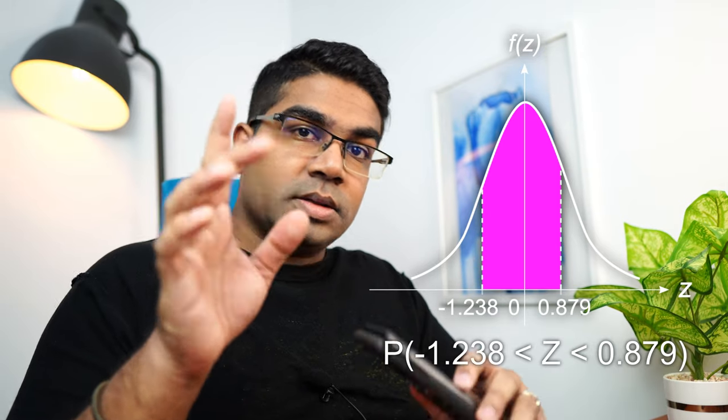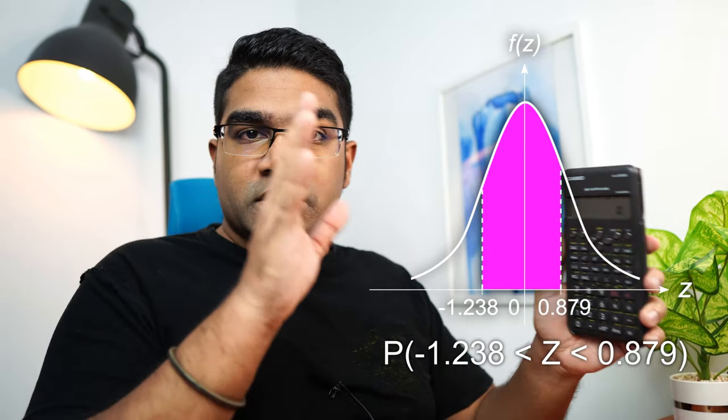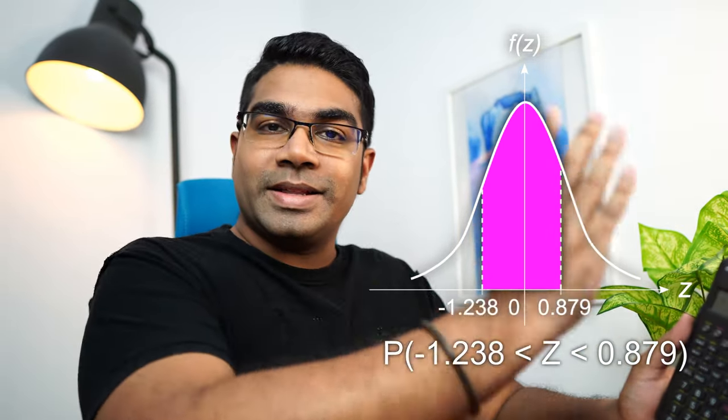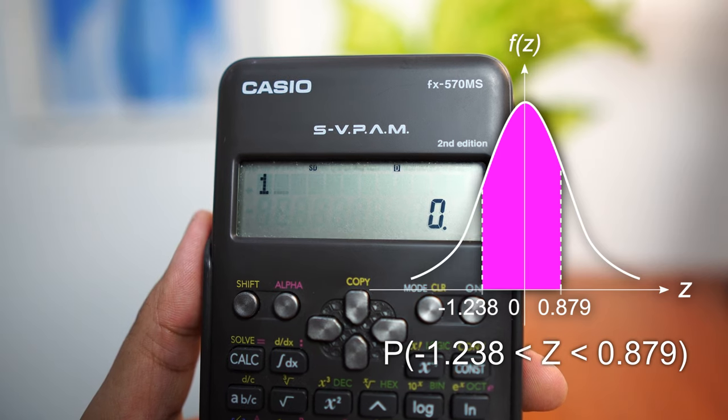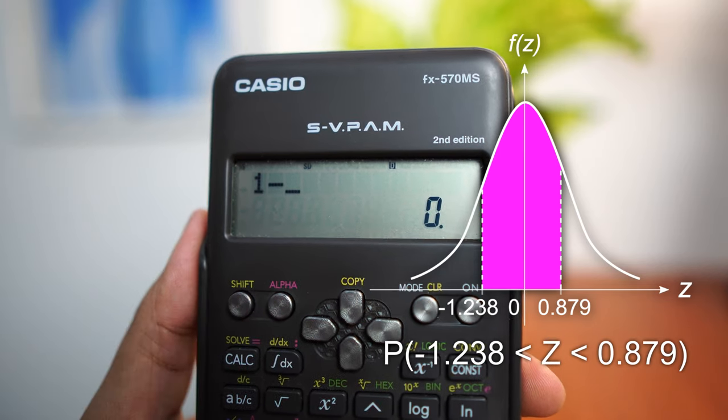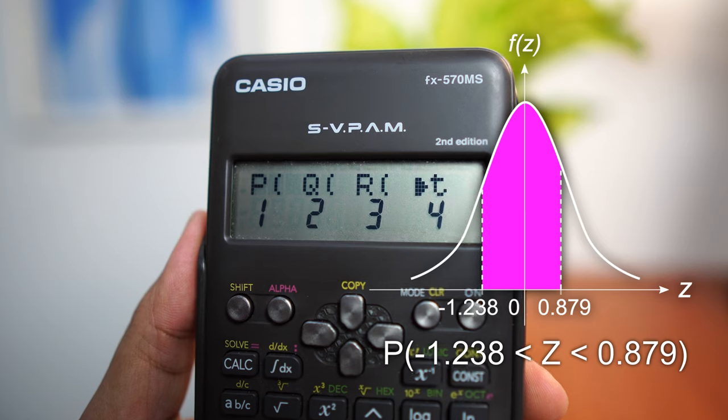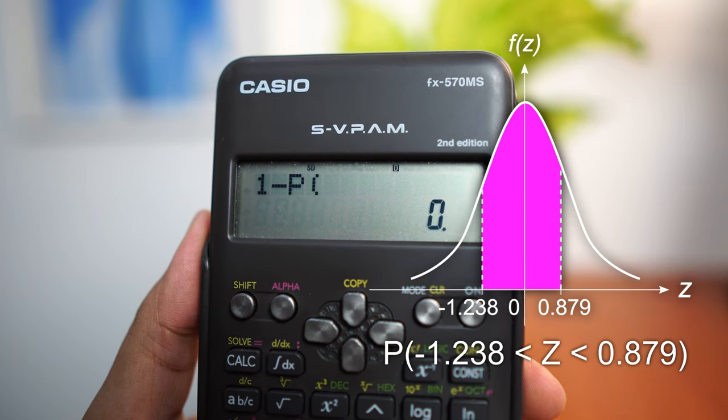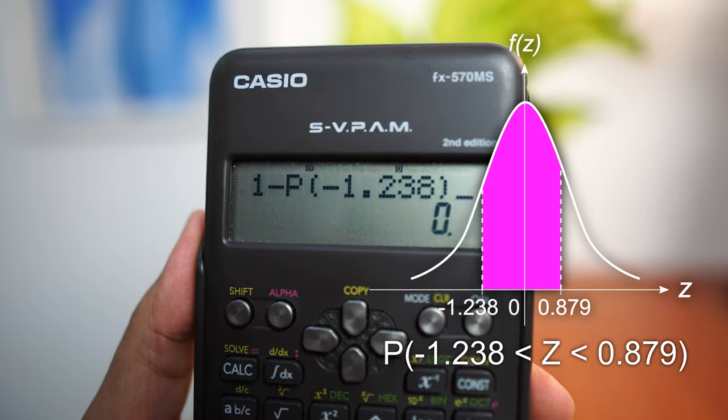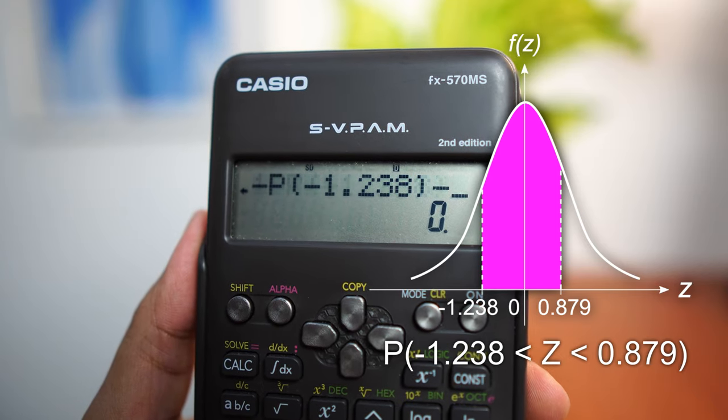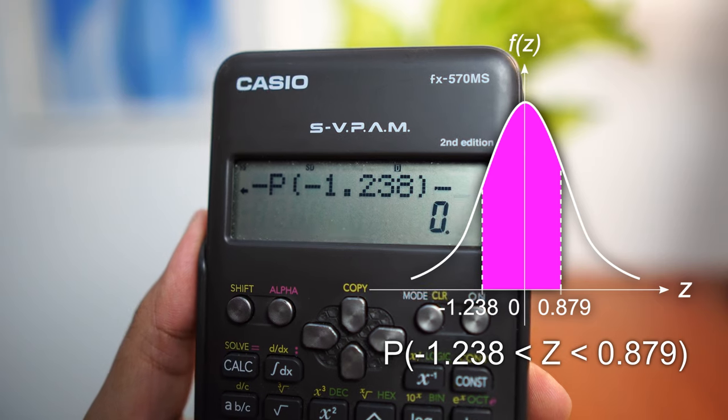The first way is we take 1, which is the probability of the total area under the graph and we subtract the two areas on the left and the right. That would be 1 minus, on the lower tail probability, we have P. So choose P and key in the Z-score, that is negative 1.238. Close the bracket. Now we want to subtract the upper tail side. So minus,